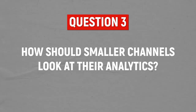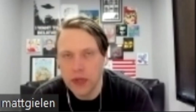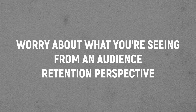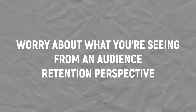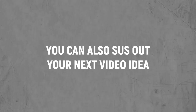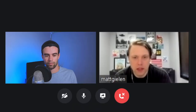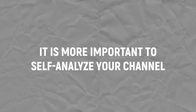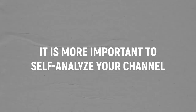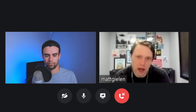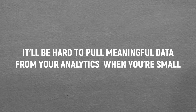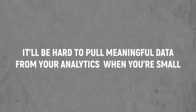For small channels with less than 2,000–5,000 views a month, what lens should they look at their analytics through? I would say just worry about what you're seeing from an audience retention perspective, and what topics to make videos about. When you're that size, the more important analysis is a self-analysis based on raw view numbers and how you're feeling about the videos beyond the retention metrics. Every video is going to have an asterisk next to it, and it's going to be really difficult to pull any meaningful insights out of your YouTube analytics when you're that size.